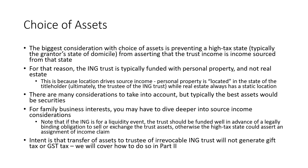There are many considerations to take into account, but typically the best assets here would be portfolio securities. You could use family business interests as well, but there are some considerations — you may have to look through the family entity to dive deeper into source income considerations. For example, if you had an entity that owned real estate, it would be hard to move the situs of the entity and avoid the source income tax issues, because by corporate level income tax or pass-through K-1 type income, you'd still have source income to the trust. So that wouldn't be a perfect solution.